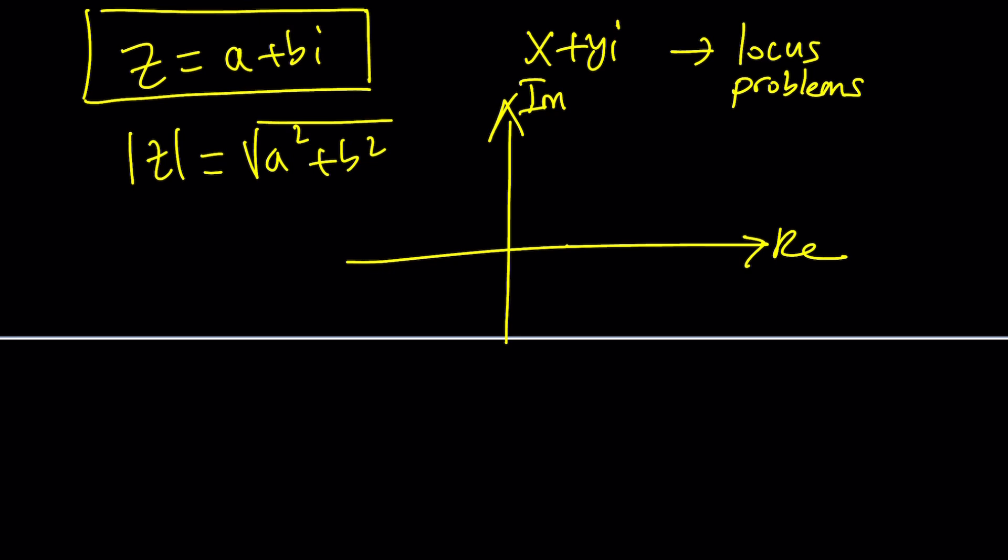So absolute value of z represents the distance of the number z from zero by using the Pythagorean theorem. To make things a little easier to understand, let's keep this in the first quadrant. So we also get an angle here which is called the argument of z, but we're not going to have to worry about it right now. I mean you can obviously, but we're probably not going to use that method.